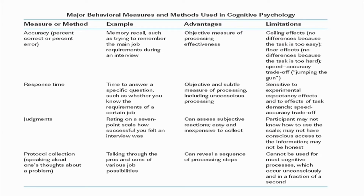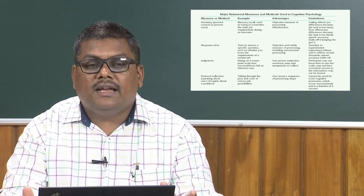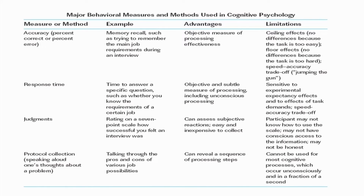The second method is response time — the time one takes to come up with a particular response. The advantage is that it is an objective method, suitable for measuring the processing mechanisms at play including unconscious processing mechanisms. The limitation is something called the experimental expectancy effect and task demands. Each experimenter, when going into an experiment, has certain expectations from the subjects. Subjects identify this expectancy and actually behave in a similar way — so if an experimenter wants a subject to take more time in responding, the subject may take more time even if the processing is fast.